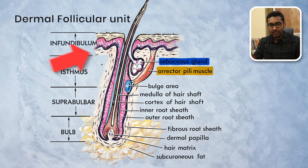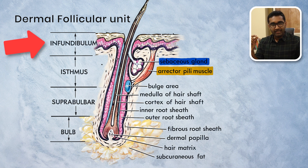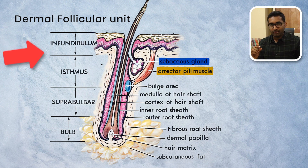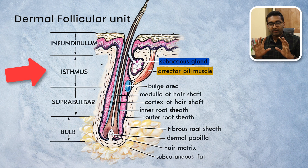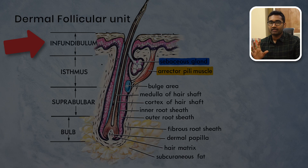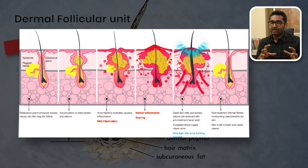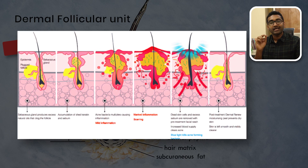The upper part of the follicular unit opening is called the infundibulum. Below that, where the erector pili muscle attaches, is called the isthmus. This is the infundibulum part, and this is where acne pathology begins.